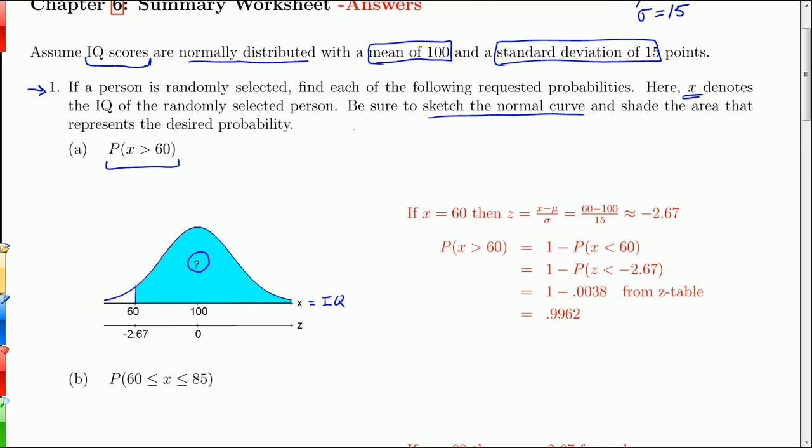The thing is we have to convert this X score to a Z score, where the mean of the Z distribution is 0. That corresponds to 100 there. So if X is 60, I use the formula that Z equals X minus mu over sigma, 60 minus 100 over 15, which is negative 2.67. So that's how I got this negative 2.67.